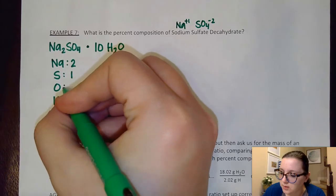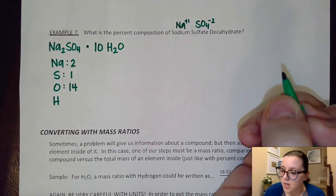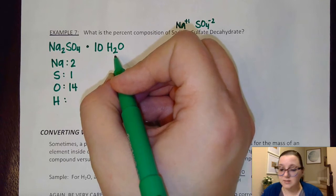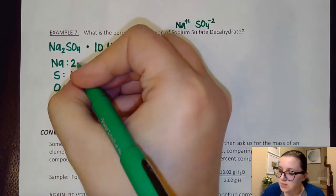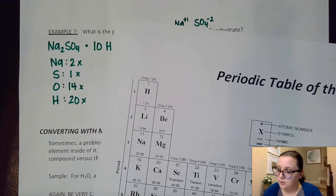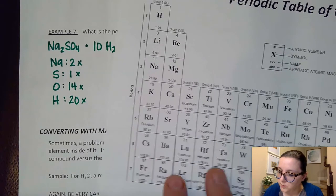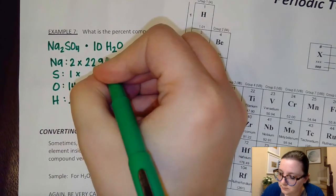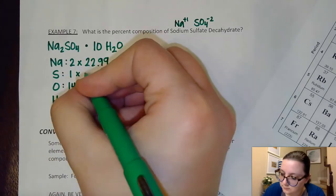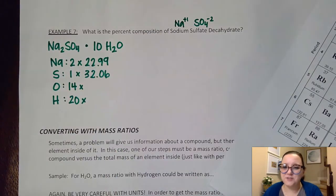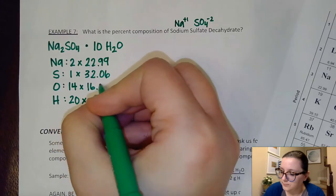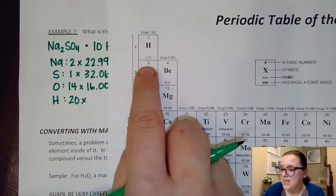Finally, for the hydrogens, this 10 would get multiplied by the two. So that coefficient and the subscript get multiplied together, and I would have 20 of those. So then again, I'm going to take these and I'm going to multiply them by their molar masses from the periodic table. So looking at my periodic table here, sodium is 22.99. My sulfur is 32.06. I know a lot of us remember this one. Our oxygen is 16. We see that one used a lot. And then hydrogen is another one we see a lot is 1.01.